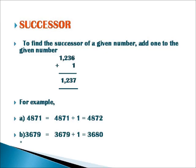Here, we have a few examples. Now, find the successor of 4871. Yes, 4871 added by 1 gives you 4872. In the second sum, 3679 is added by 1 gives you 3680. Here, 3680 is the successor of 3679.